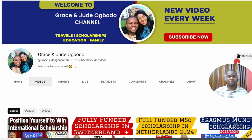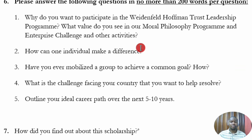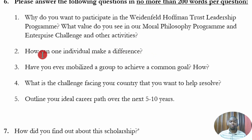The second part of the motivation letter asks: how can one individual make a difference? They want to see what impact you have made in the past, because making a difference in the future requires a track record. Mention the developmental differences or impacts you have had and extrapolate what you can do in the future with a master's degree from Oxford. The third question is: have you ever mobilized a group to achieve a common goal, and how? Mention community development services you have done that are related to the program you are applying for.